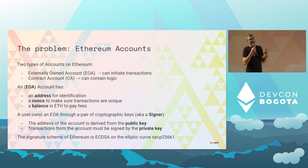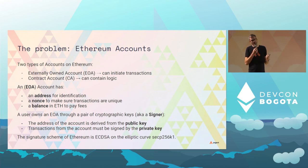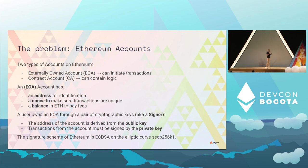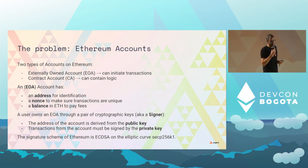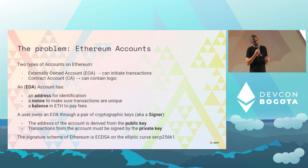On Ethereum there are two types of accounts: externally owned accounts, or EOAs, that can initiate transactions, and contract accounts that can contain logic. An EOA has an address for identification, a nonce to make transactions unique, and a balance in ETH to pay transaction fees. The user owns an account through a pair of cryptographic keys — also called a signer. The address of the account is derived from the public key, and transactions can only be initiated by the private key.